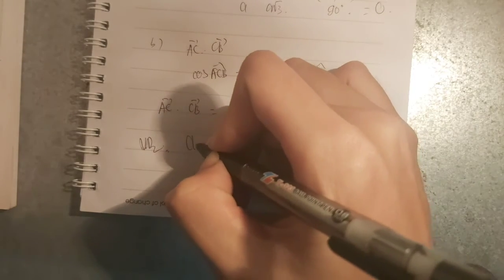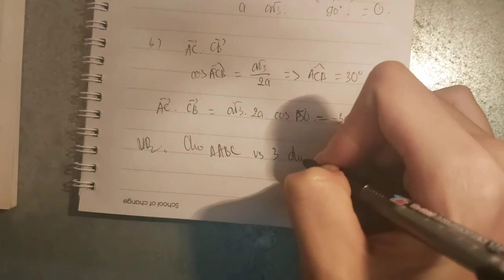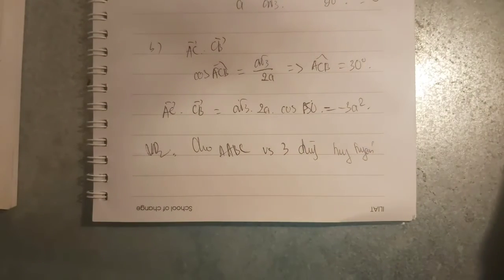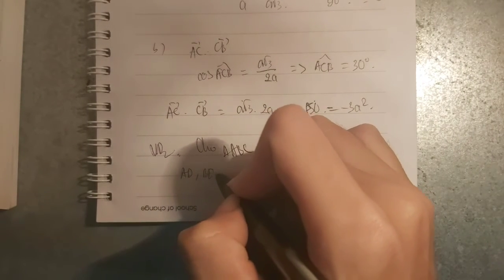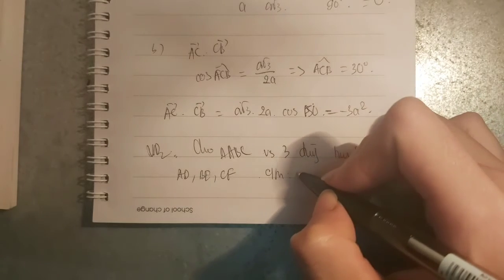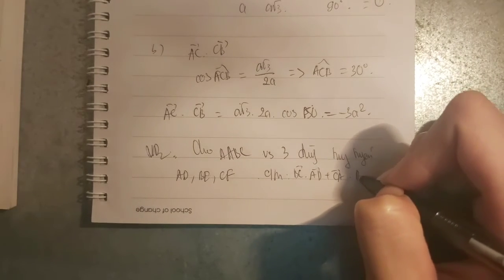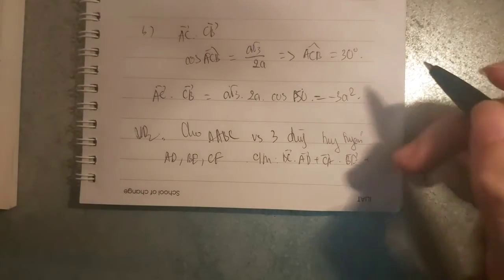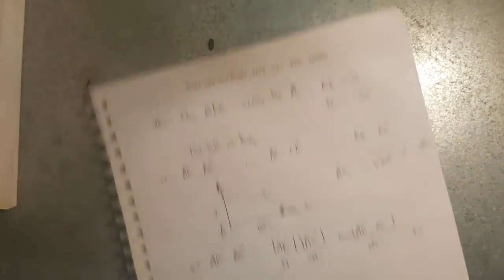Cho tam giác ABC với 3 đường trung tuyến AD, BE, CF. Chứng minh BC·AD + CA·BE + AB·CF = 0. Đấy là đề bài.